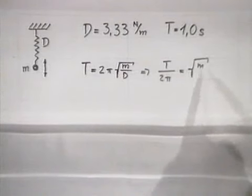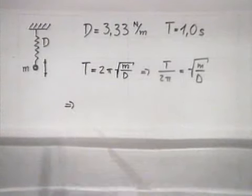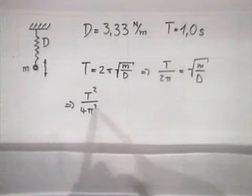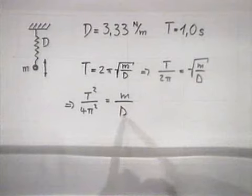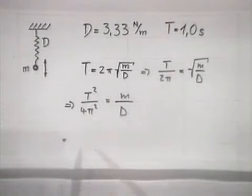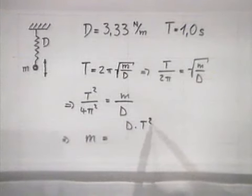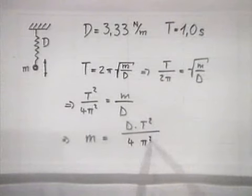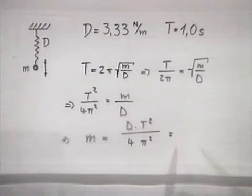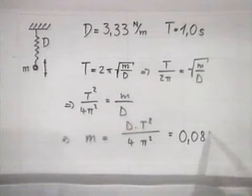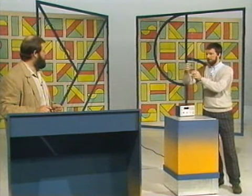Ich quadriere beide Seiten und bekomme T² durch 4π² gleich Masse durch Federkonstante. Dann bringe ich noch die Federkonstante auf die andere Seite und erhalte als Formel: Masse gleich Federkonstante mal Periode zum Quadrat dividiert durch 4π². Wenn ich die gegebenen Werte einsetze, bekomme ich eine Masse von 0,084 Kilogramm. Das heißt, du musst genau 84 Gramm Pendelmasse verwenden. Dann werde ich noch diese Zusatzmasse anbringen.